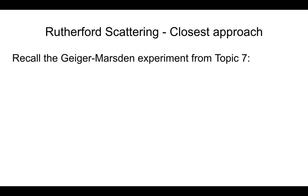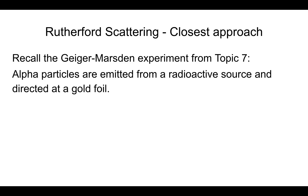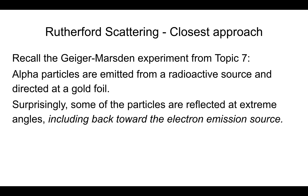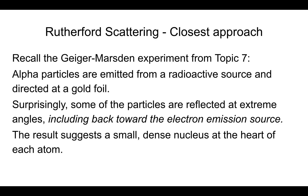You might recall the Geiger-Marsden experiment from Topic 7, where alpha particles are emitted from a radioactive source and blasted through a gold foil. This resulted in a surprising finding that some of the particles deflect or even reflect backward toward the emission source. What they expected was a small angle deflection, a slight deflection, and what they got was, in very rare instances, extreme deflection. This surprising result suggests a small, dense nucleus at the heart of each atom.